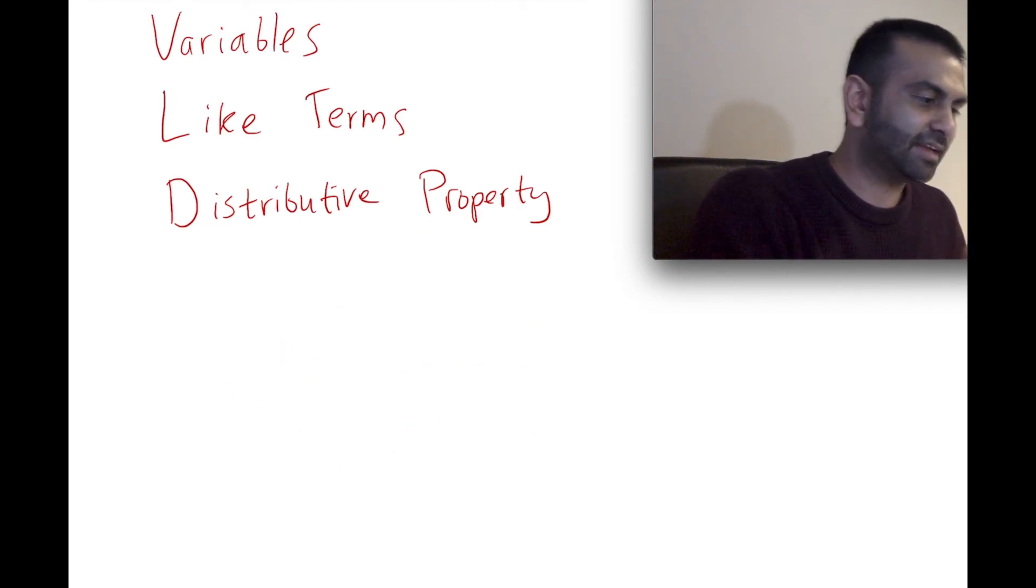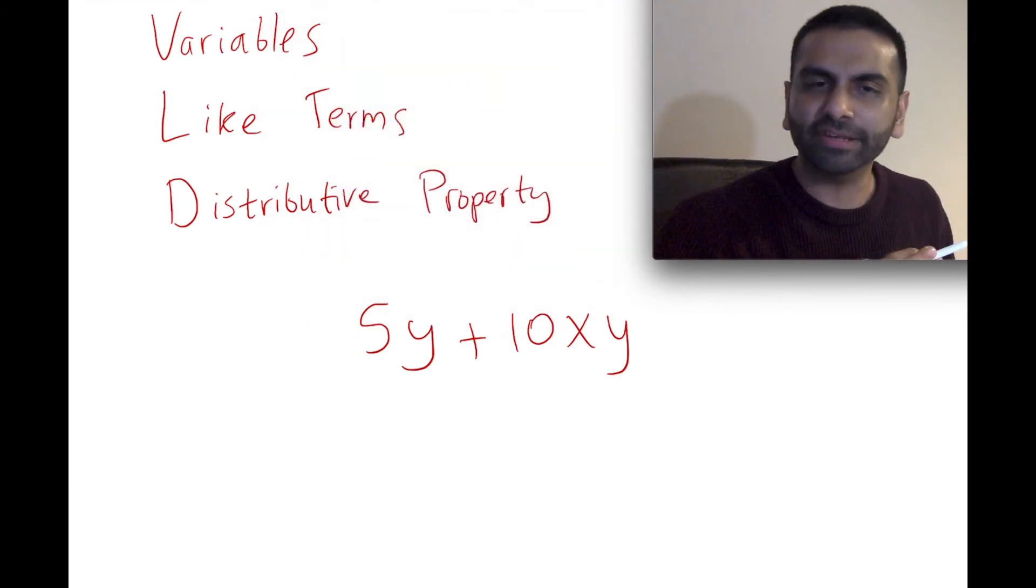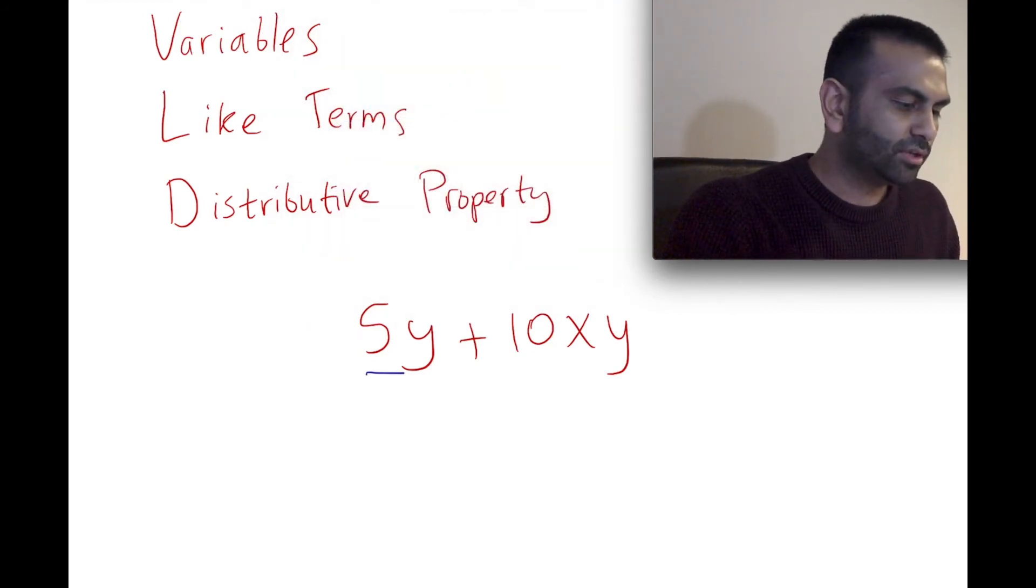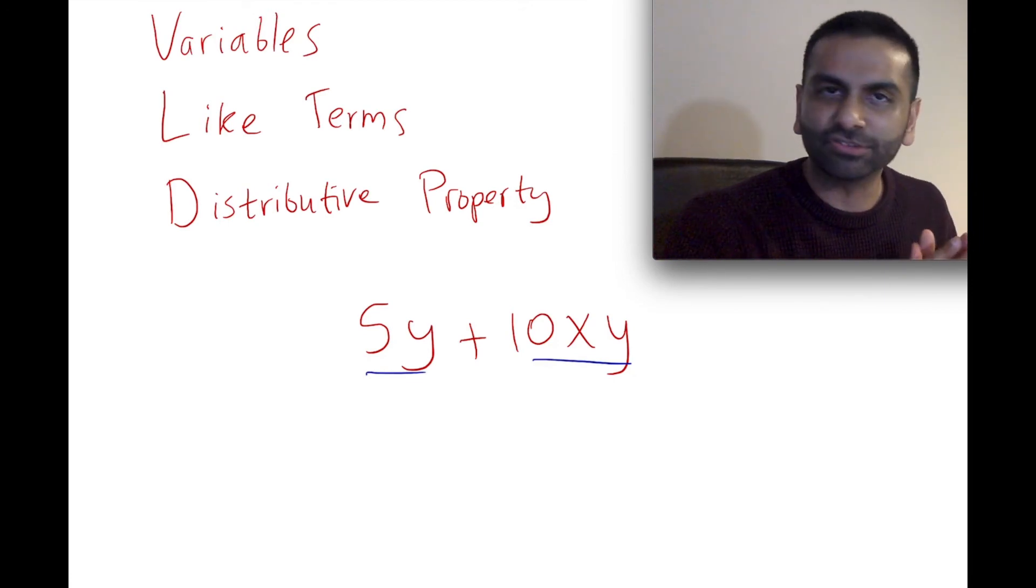Now this can also go in the other direction, like factoring. If you have, let's say, 5Y + 10XY and you were asked to factor this, well, looking at the anatomy of each of these terms, they have a coefficient, which is just a fancy way to say the number, and then they have variables that are multiplied.